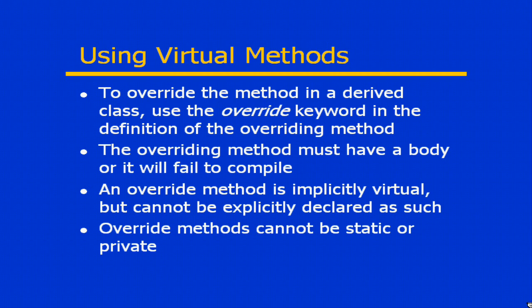Any override method is implicitly virtual, meaning that if you were to derive from the class which overrides a virtual method, that same method could be overridden again in the subclass below. So every override method is implicitly virtual, but you cannot use the virtual keyword when defining the override method — this happens implicitly and cannot be marked explicitly as virtual.